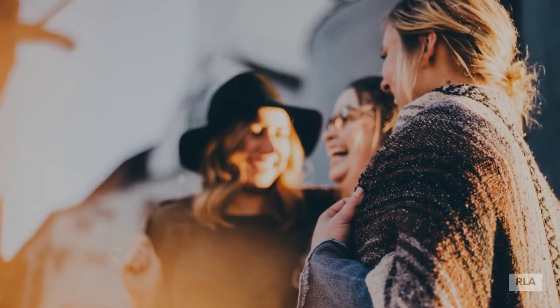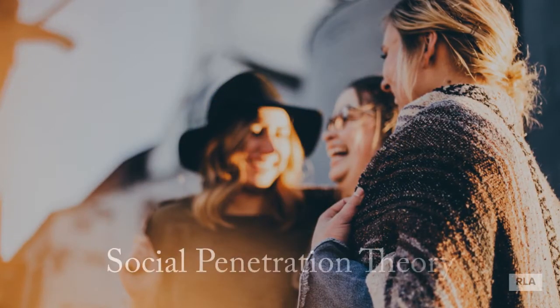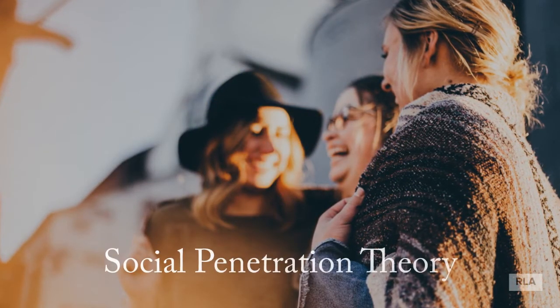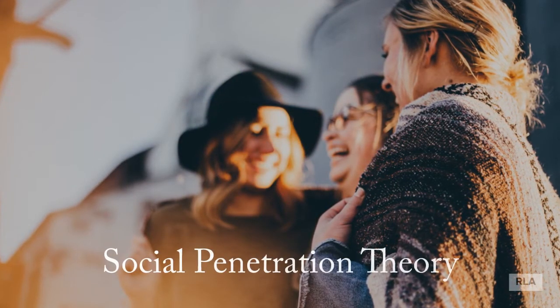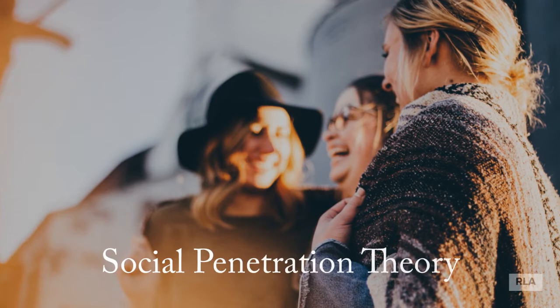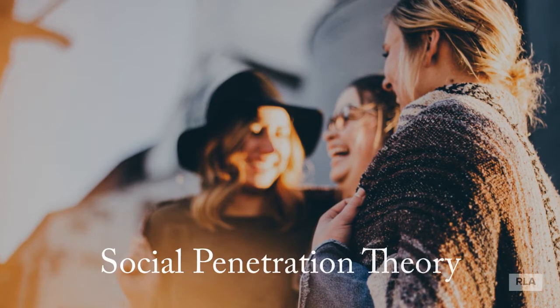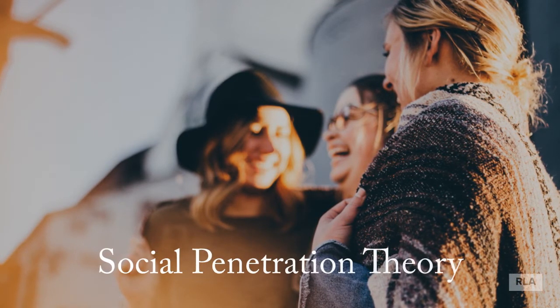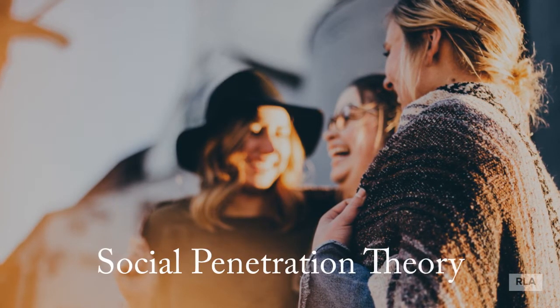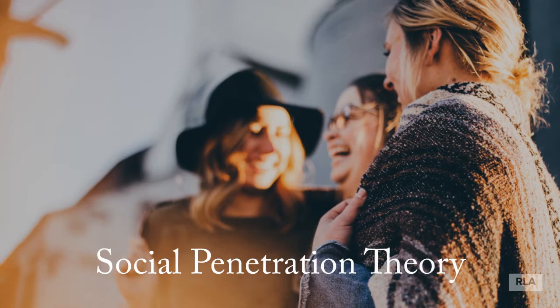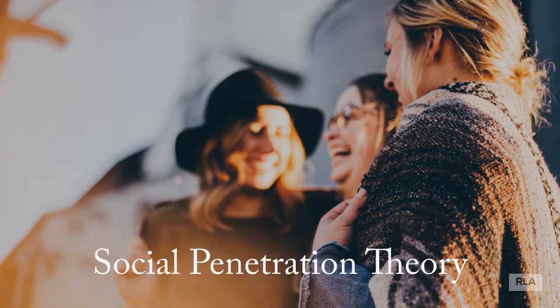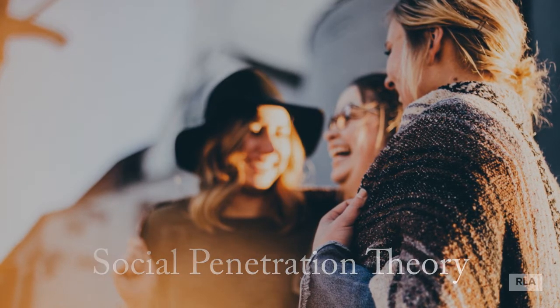In the early 70s, Altman and Taylor, two social psychologists, developed a model that looked at how relationships develop through social disclosure. They called the theory the Social Penetration Theory.